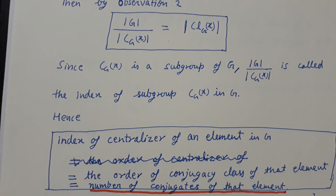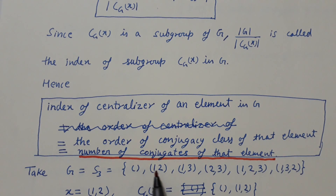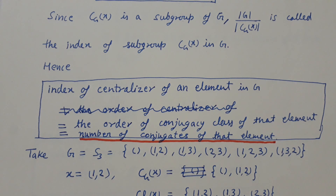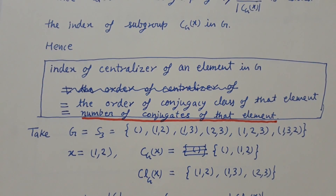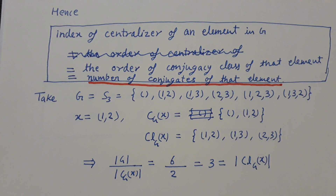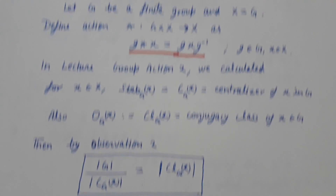For example, let G = S₃, the symmetric group on three symbols. Take x = (1 2). The centralizer of x in G contains only identity and (1 2), so it has order 2. One can check that the conjugacy class of x in G has three elements: (1 2), (1 3), (2 3). Indeed, |G| / |C_G(x)| = 6/2 = 3, which equals the number of elements in the conjugacy class of x in G.